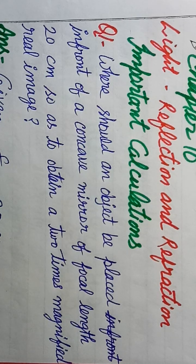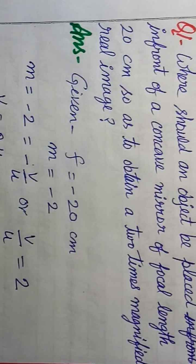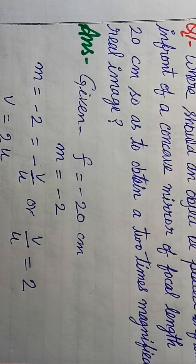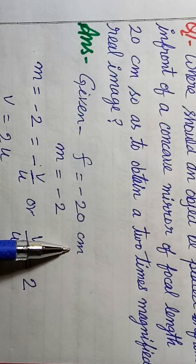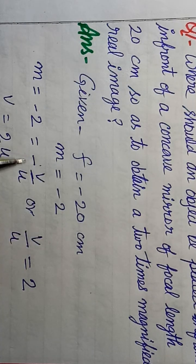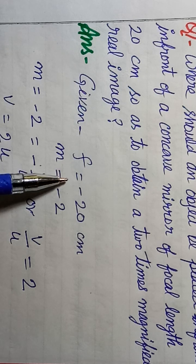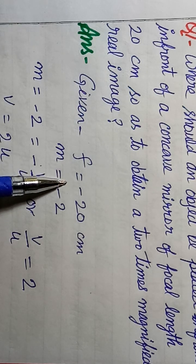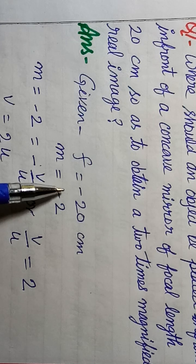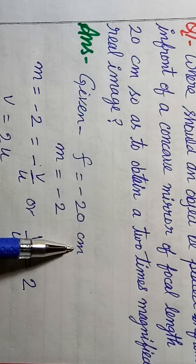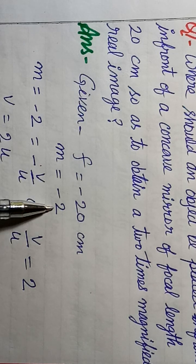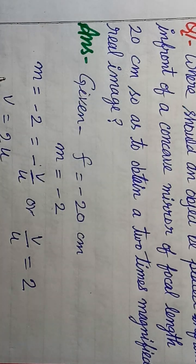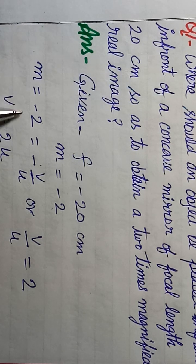Given: Focal length f = minus 20 cm, because it is a concave mirror. Magnification m = minus 2. So m = minus v upon u = minus 2.